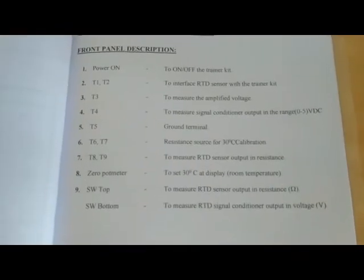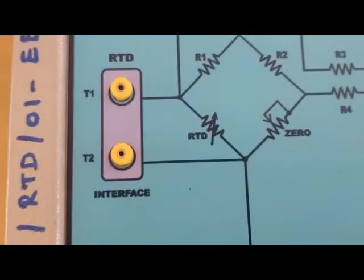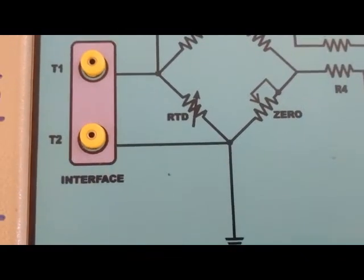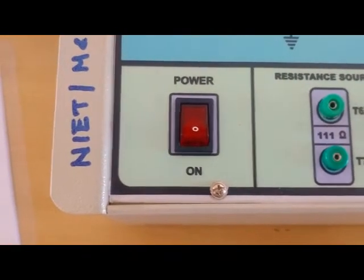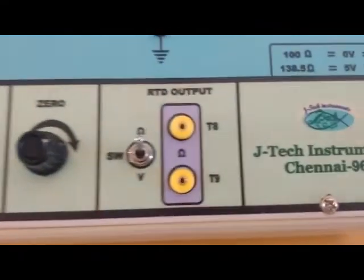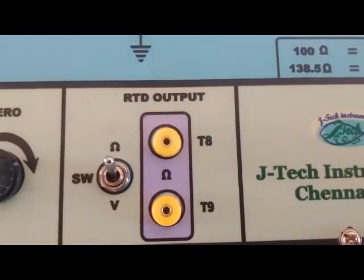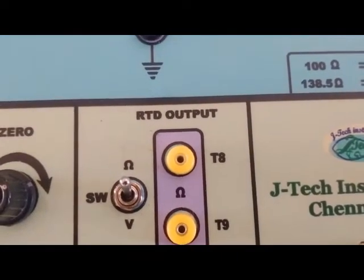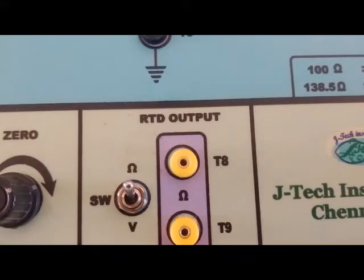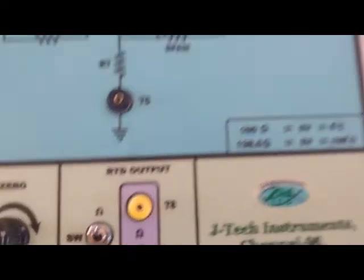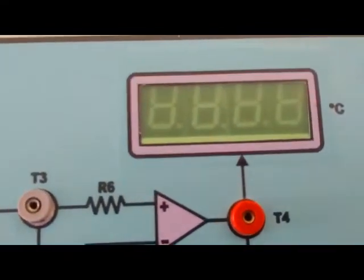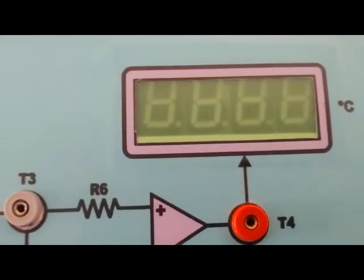This is the front panel description. You can see here T1 and T2 to interface the RTD sensor with the trainer kit, and this is the power on-off switch. This RTD output, you can take output by bringing the button down to voltage, or if the button is upward you can take ohms. You can see the temperature in degree Celsius.